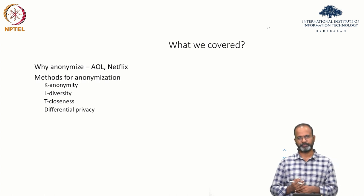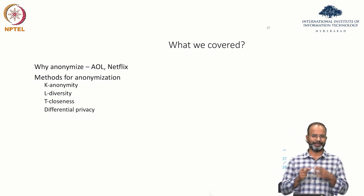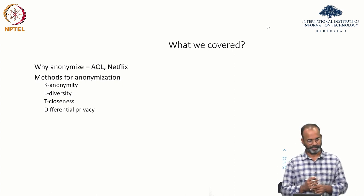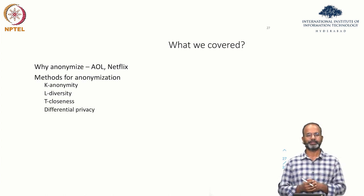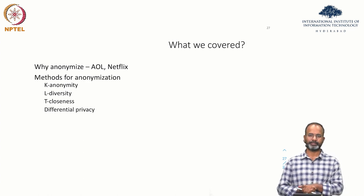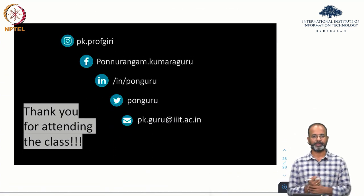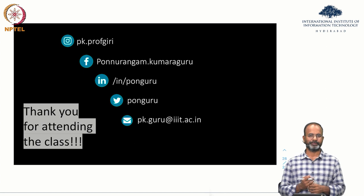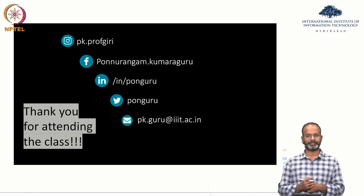So that's what we covered for week six — slightly dense content, so I'm keeping it a little shorter this week. We covered: why anonymize (AOL data leak, Netflix), and four methods for anonymization: k-anonymity, l-diversity, t-closeness, and differential privacy. Thanks for listening to this lecture. If you have any questions, feel free to drop them on the mailing list.